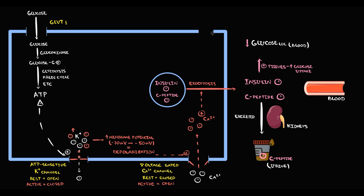In addition to this, beta cells have a GLP-1 receptor, which provides regulation of insulin secretion. Glucagon-like peptide-1 in the blood binds to the GLP-1 receptor. With binding, the receptor becomes activated. Activation of the GLP-1 receptor stimulates closing of potassium channels and opening of calcium channels. As a result, more calcium molecules enter the cell. And with increasing intracellular calcium level, exocytosis of insulin increases.